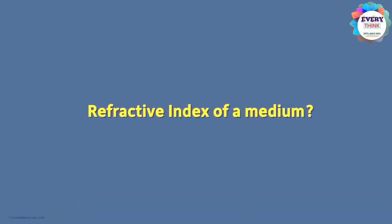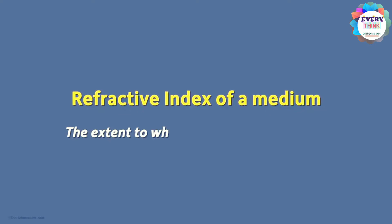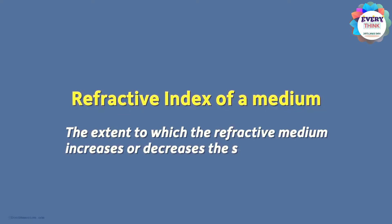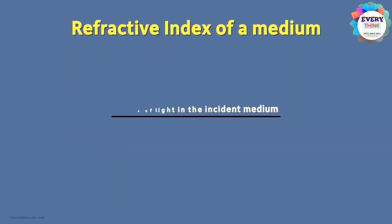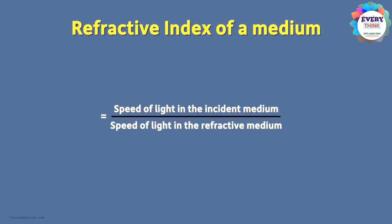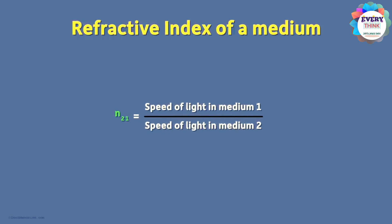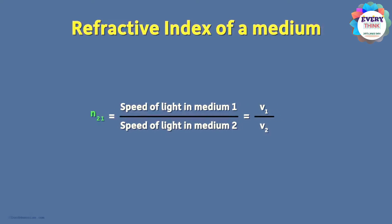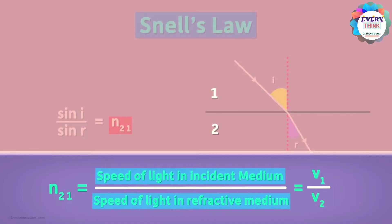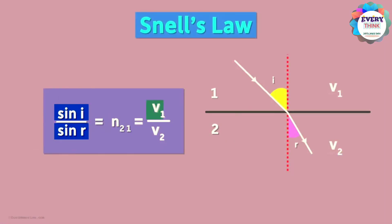The refractive index of a medium is the extent to which the refractive medium increases or decreases the speed of light. Mathematically, it is the ratio of the speed of light in the incident medium to the speed of light in the refractive medium. It is denoted by n, where the two subscript numbers represent the two media. We read this as the refractive index of medium 2 with respect to incident medium 1, where V1 and V2 are speeds of light in medium 1 and 2 respectively. So we can also say that sin i / sin r = V1 / V2.